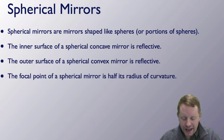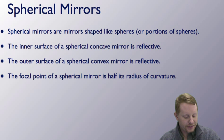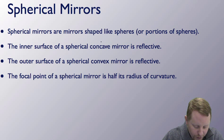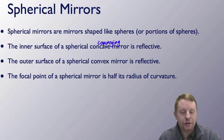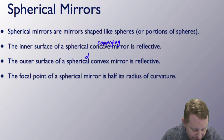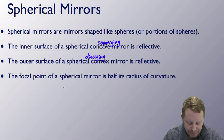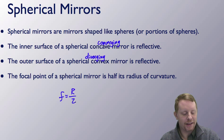We can also have spherical mirrors — mirrors that are shaped like spheres, or at least portions of spheres. The inner surface of a spherical concave mirror is reflective; we call these converging mirrors. The outer surface of a spherical convex mirror is reflective; these are called diverging mirrors. The focal point of a spherical mirror is half its radius of curvature, so the focal length f equals the radius divided by two.